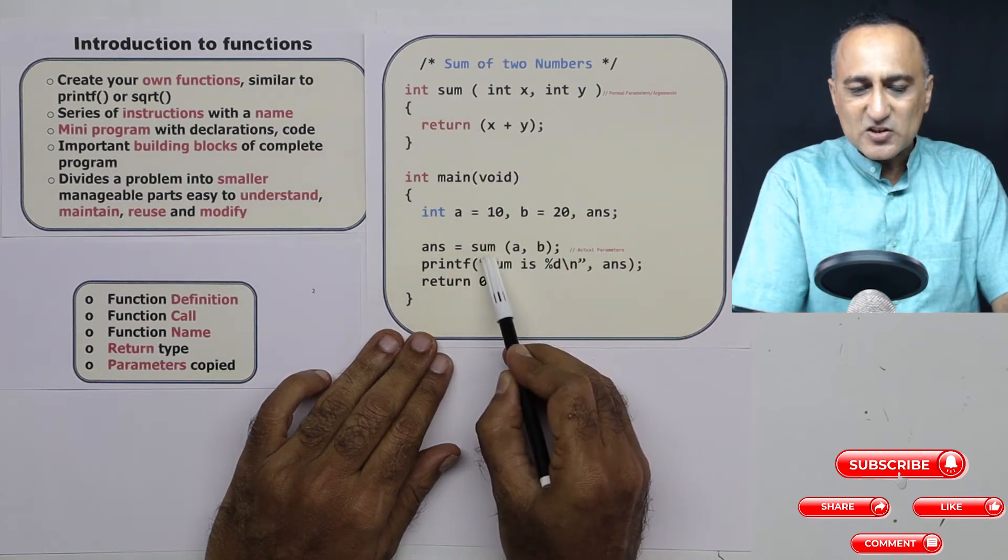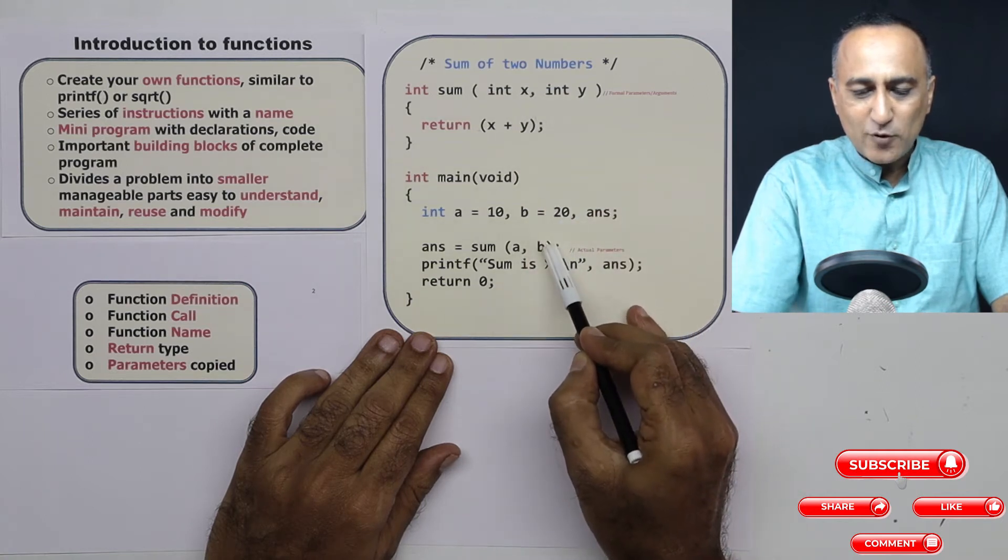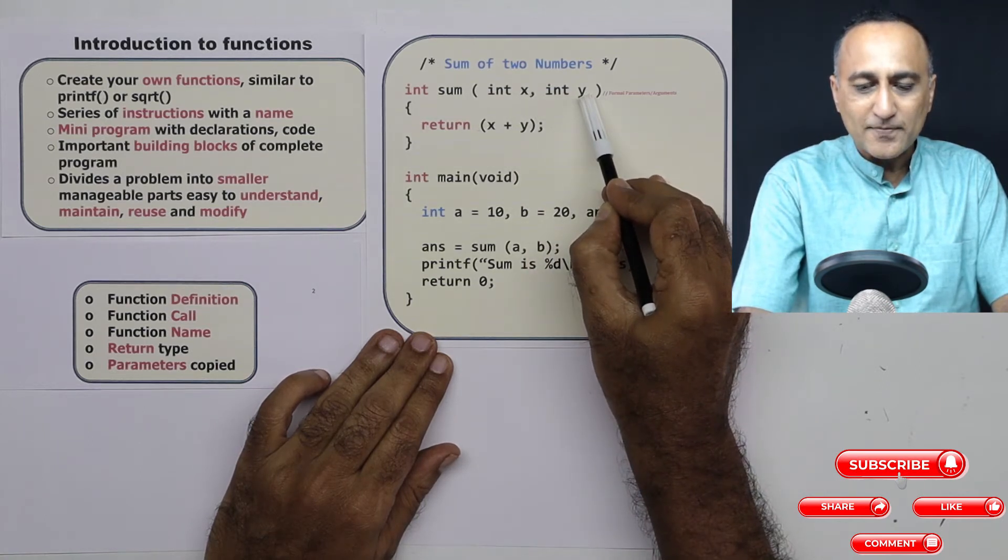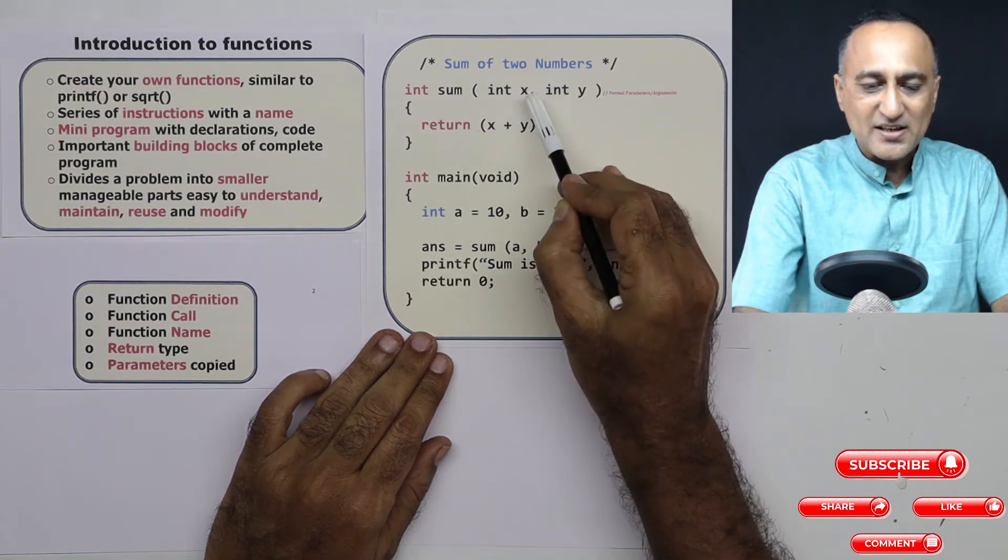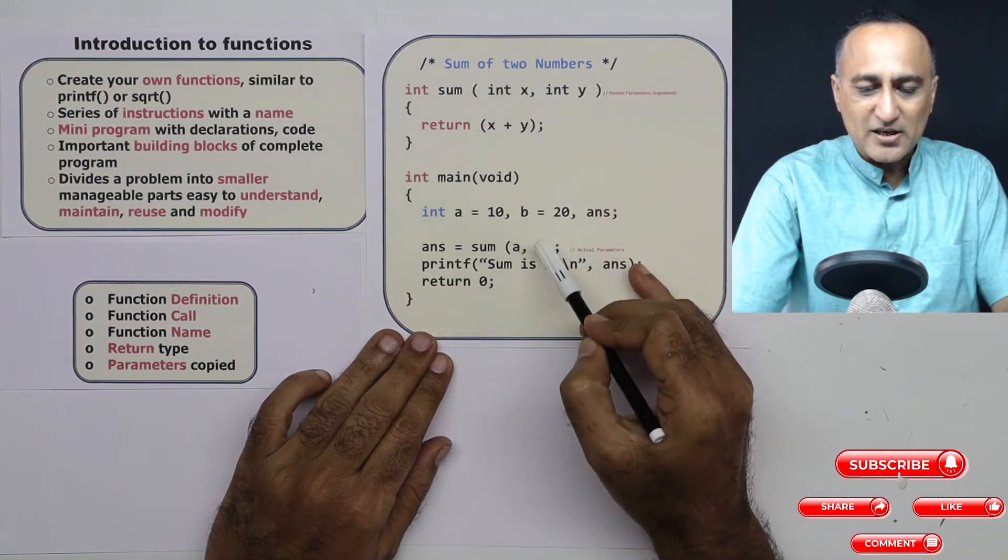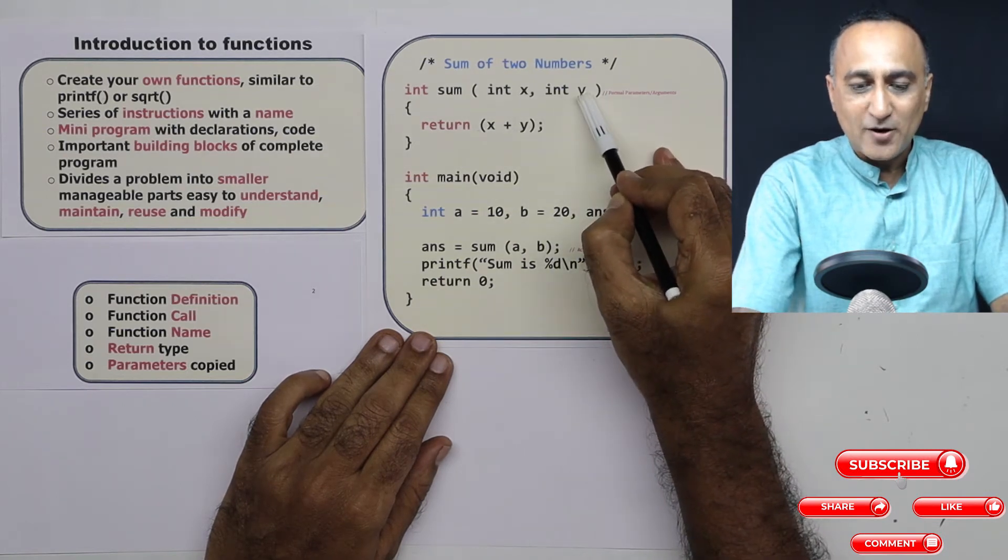When this thing is called, the values of a get copied to x, the value of b gets copied to y. You need to understand: a is in a different memory location, x is a different memory location, b is a different memory location, y is a different memory location.